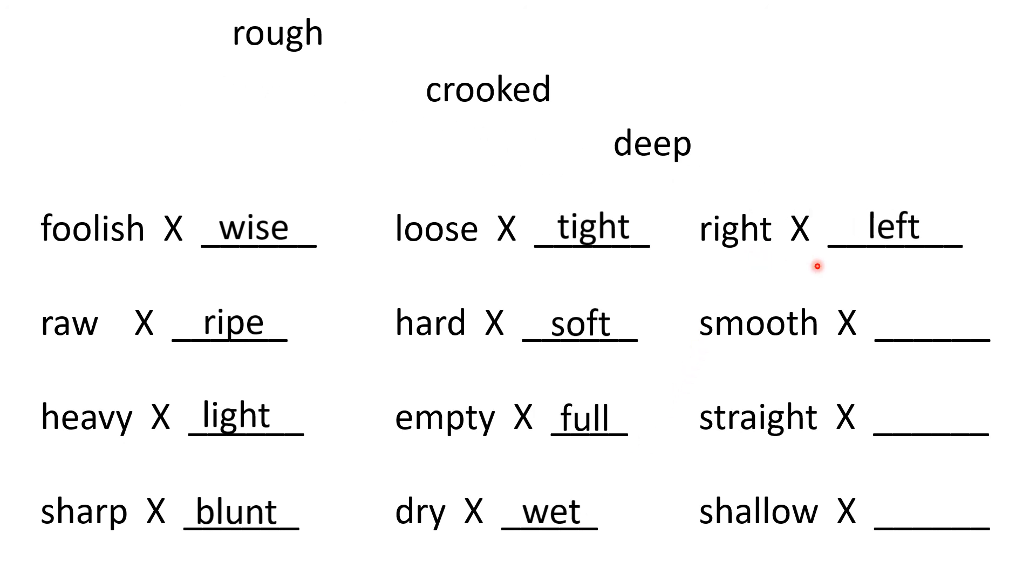Right, left. You can also use the word wrong with it. Right and wrong. You can also say right and left. Right hand, left hand. Smooth, rough. Smooth road, rough road. Smooth and rough.